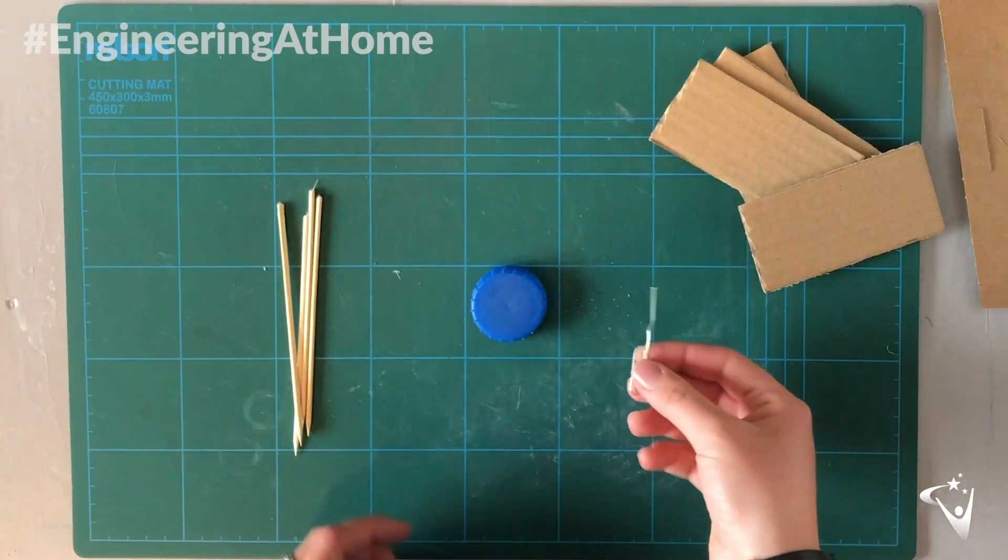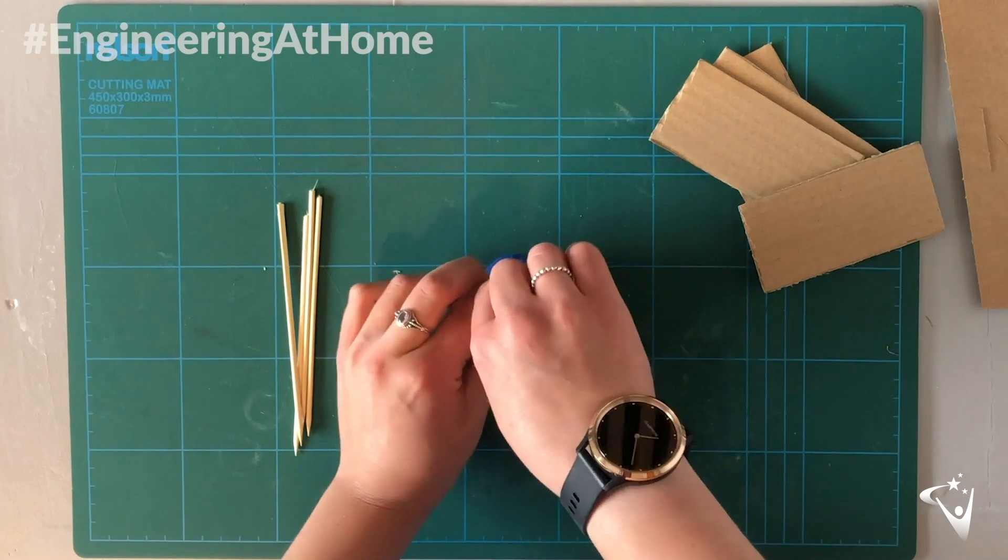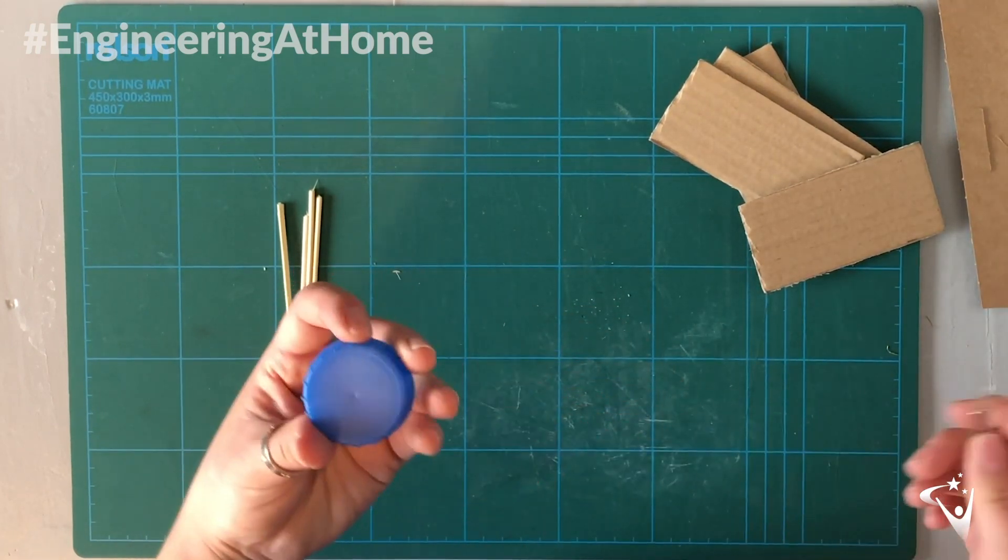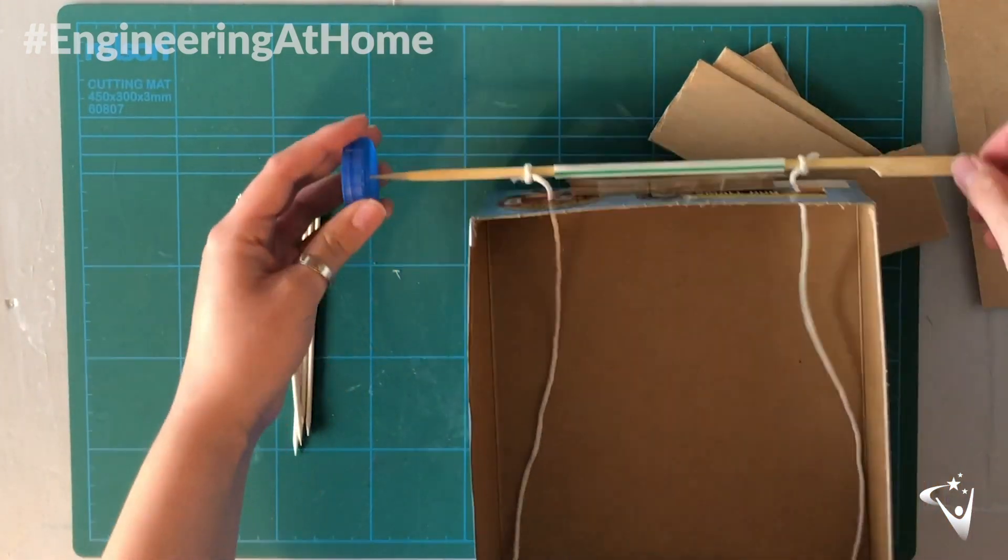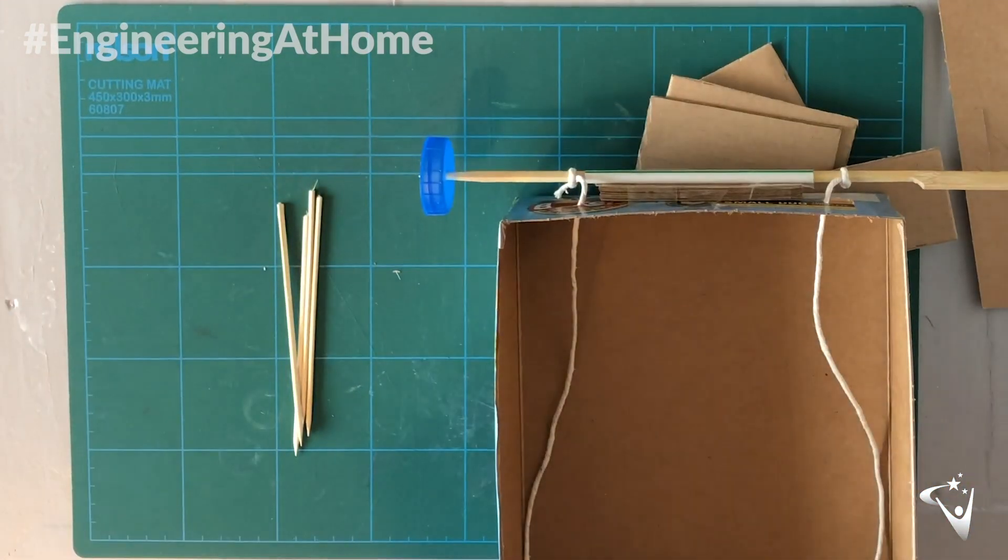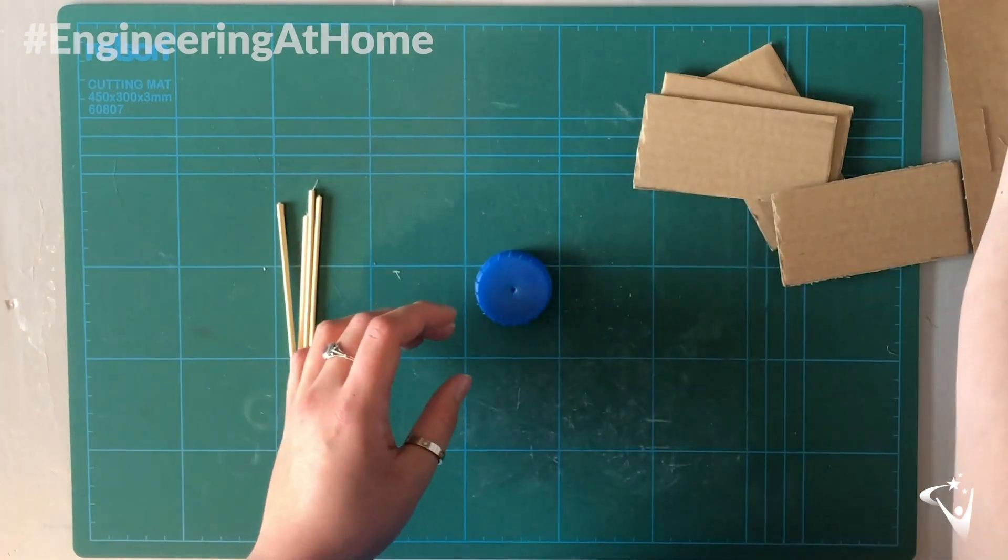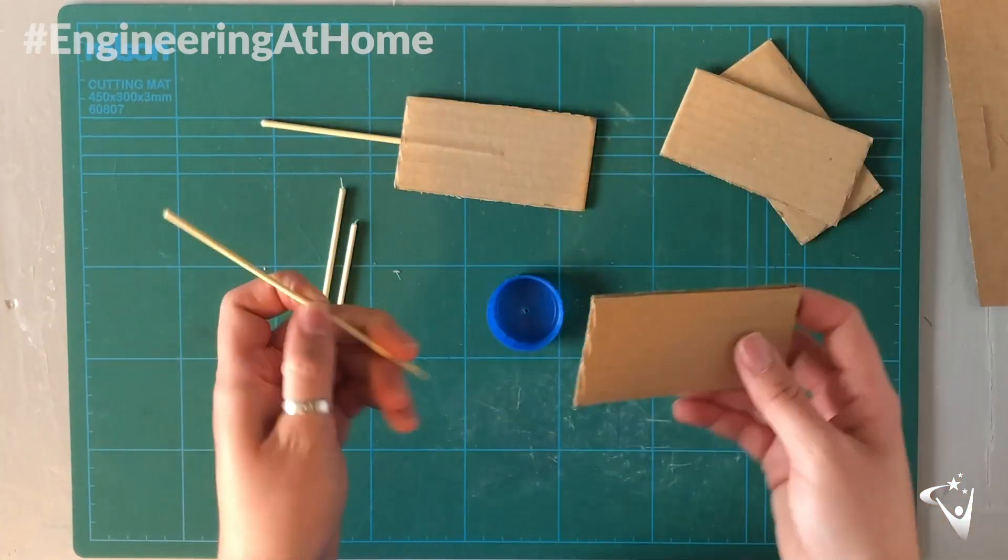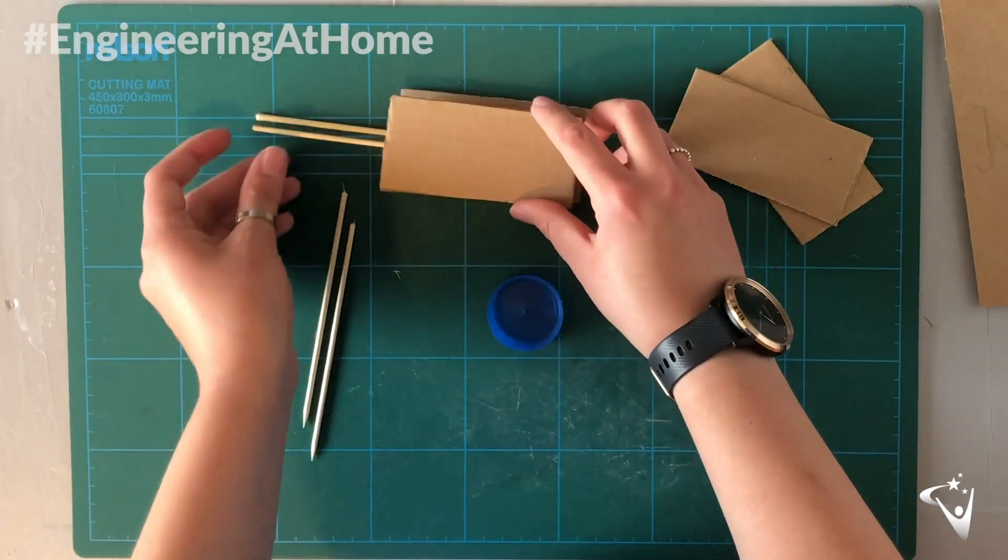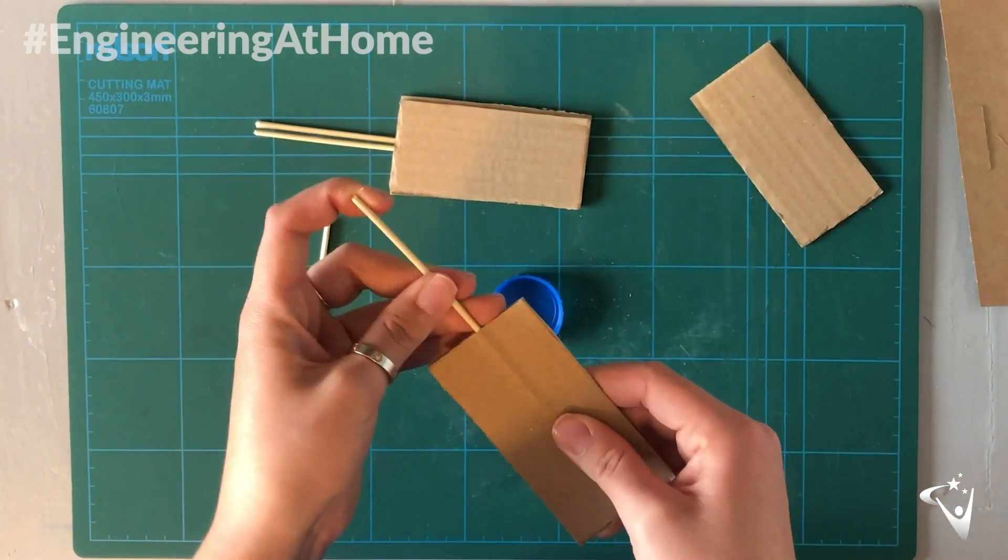Next we want to use a paper clip to make a small hole in the middle of the lid. This means we can attach it to the axle of our lift. Then we can attach the blades to all the skewers. Try and get the skewers exactly in the middle of the blades and make them all the same length.